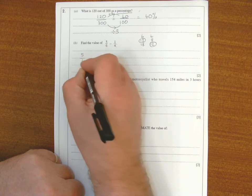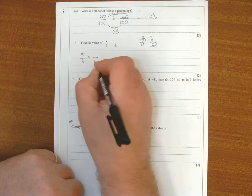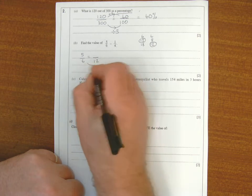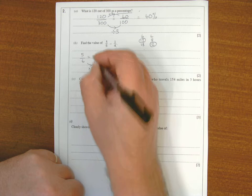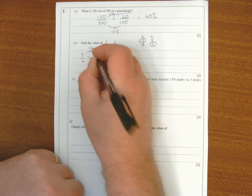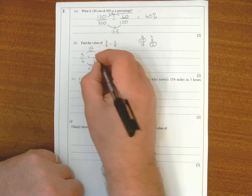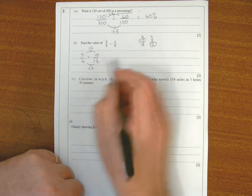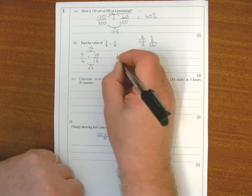So 5 over 6, change that first. To get the 6 to a 12, times by 2. So I have to do the same to the top number, times by 2, and 5 times 2 is 10. So 5/6 is the same as 10/12.